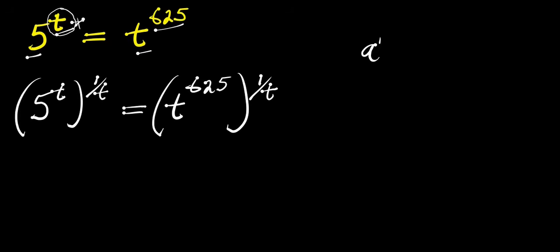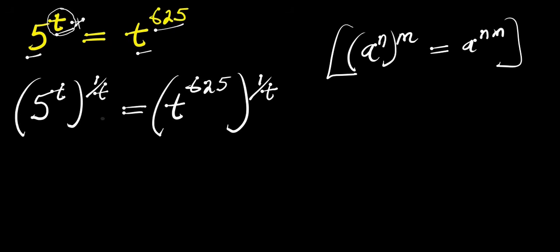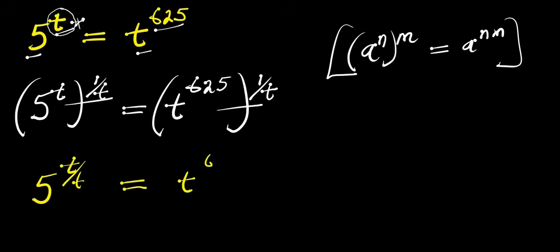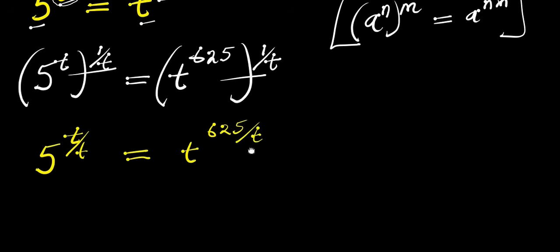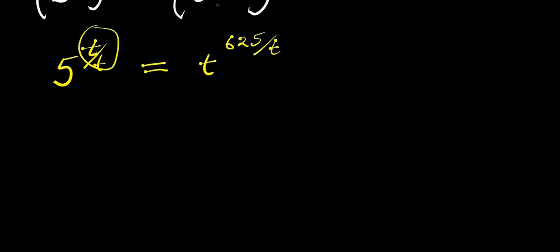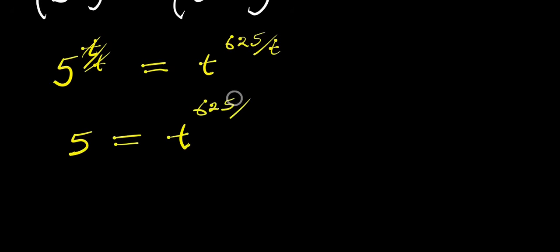Now, if you have a power n raised to the power m, that equals a to the power n times m. We multiply out the exponents. So what we have left is 5 to the power of t times 1, which is t over t. And this equals t to the power of 65 times 1, which is 65 over t. Remember, t over t is 1 because they cancel out, so we have 5 equals t to the power of 65 divided by t.